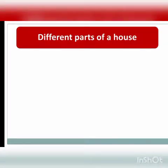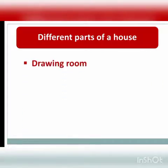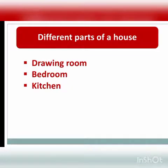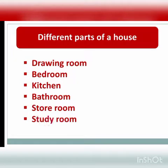Let us know the parts of our house. Now we will be seeing each part of the house. The different parts are: drawing room, bedroom, kitchen, bathroom, storeroom, and study room. These are the different parts of a house.